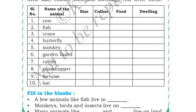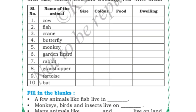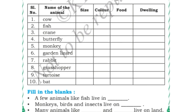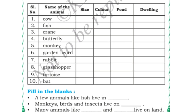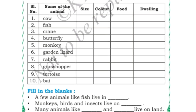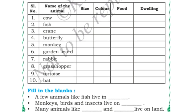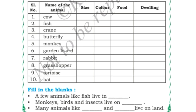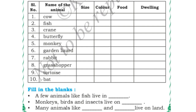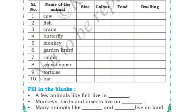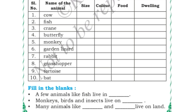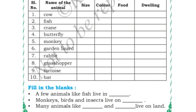Crane: size is small, colour is white, food is insects and fish, and the place where crane lives is a pond. Butterfly: size is small, colour is whichever you have seen, food can be leaves or insects, and you can write the dwelling where the butterfly lives.